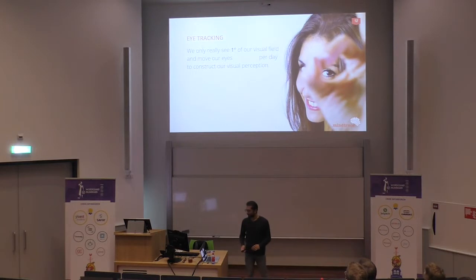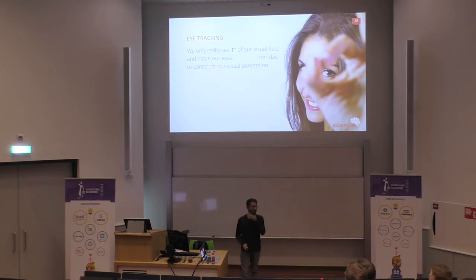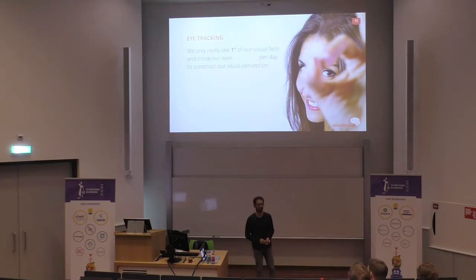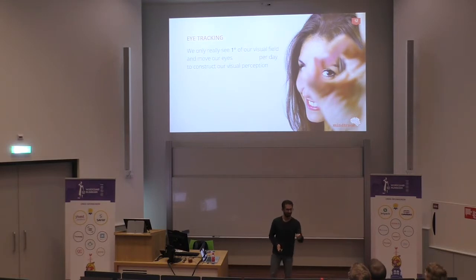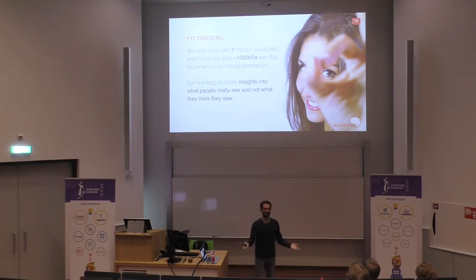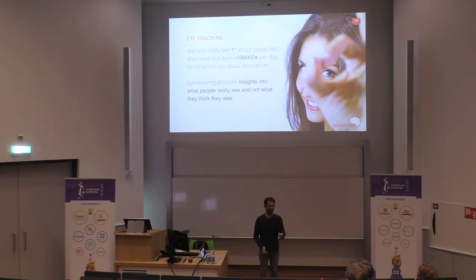When it comes to eye tracking — measuring what people see — we do that because we only see one degree of our visual field accurately. That's a biological property, which is why we keep moving our eyes constantly. Just a guess: how often do you move your eyes per day? It's about 150,000 times per day. The whole idea about eye tracking is to see what people see — and most importantly, what they don't see — because what they don't see they won't act on.